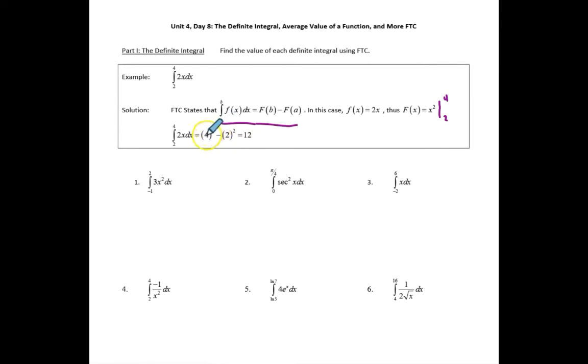We're evaluating x squared at 4, which is 16. We're subtracting out x squared evaluated at 2, which is, of course, 4. So the definite integral, or the net-signed area, bound by the function and the x-axis is 12.